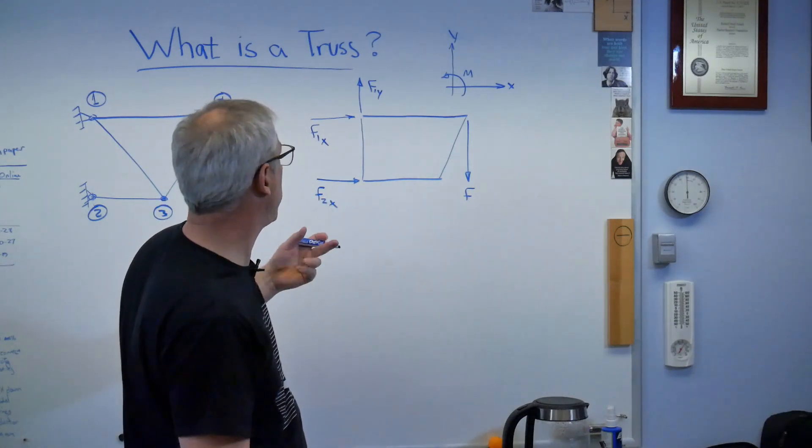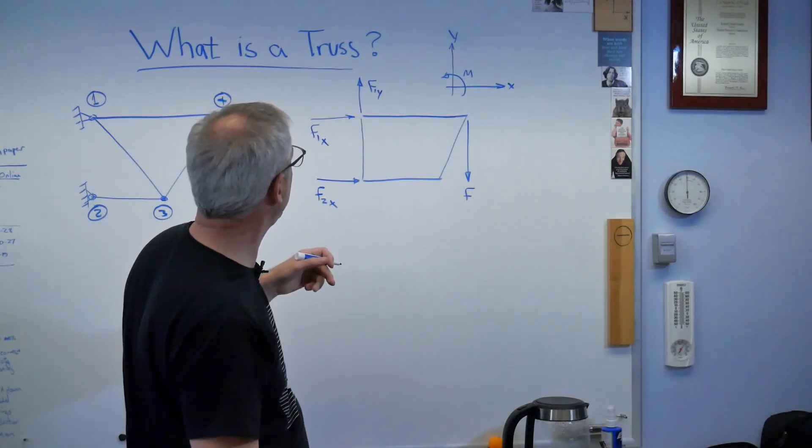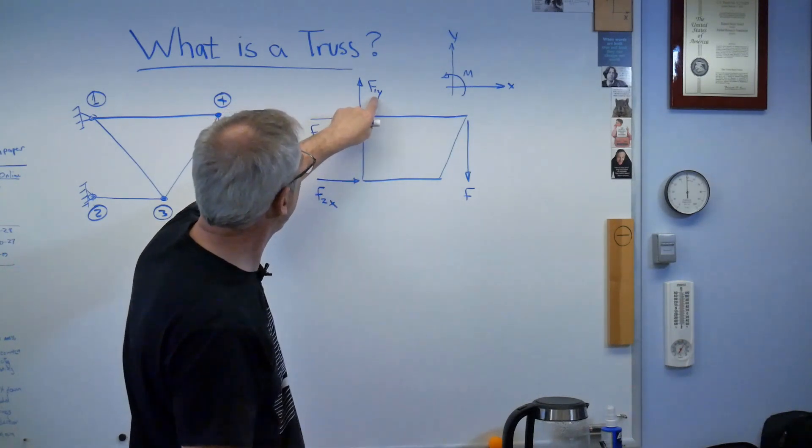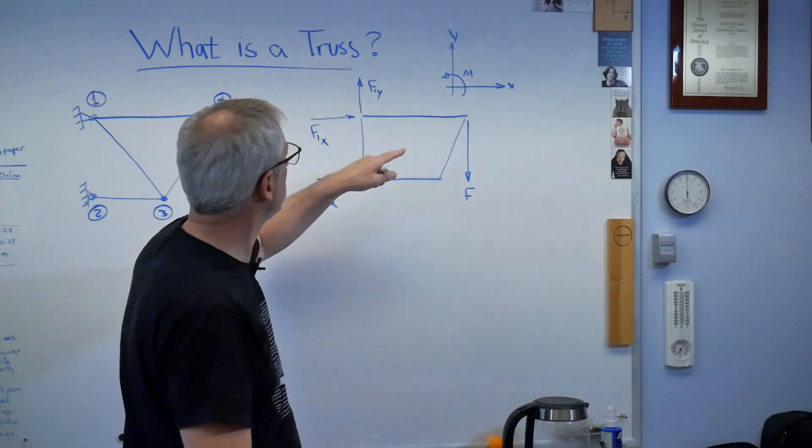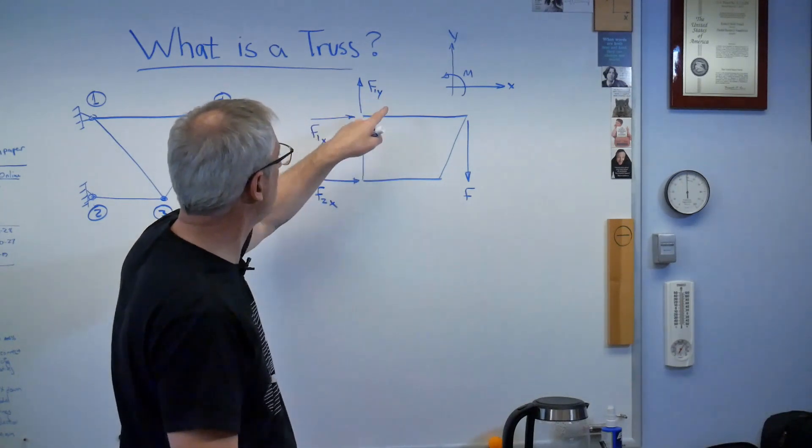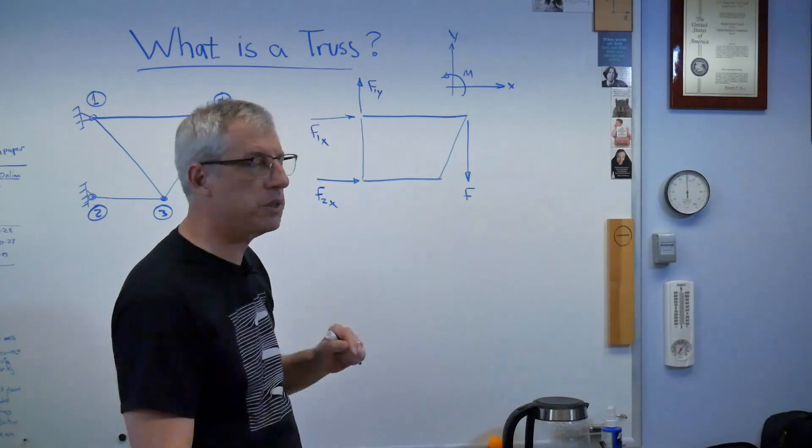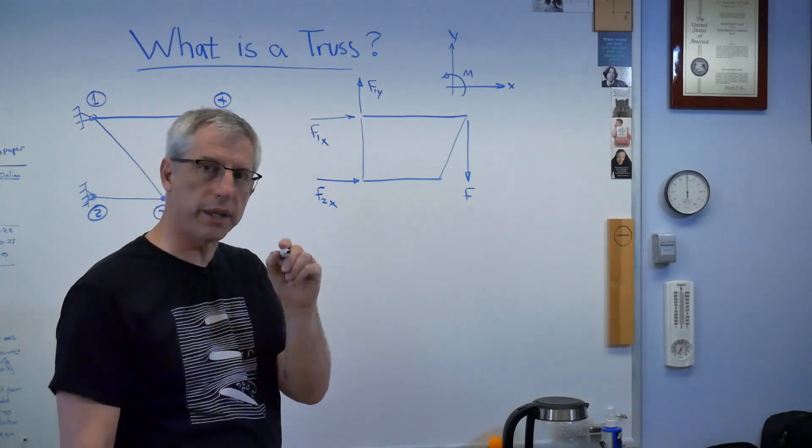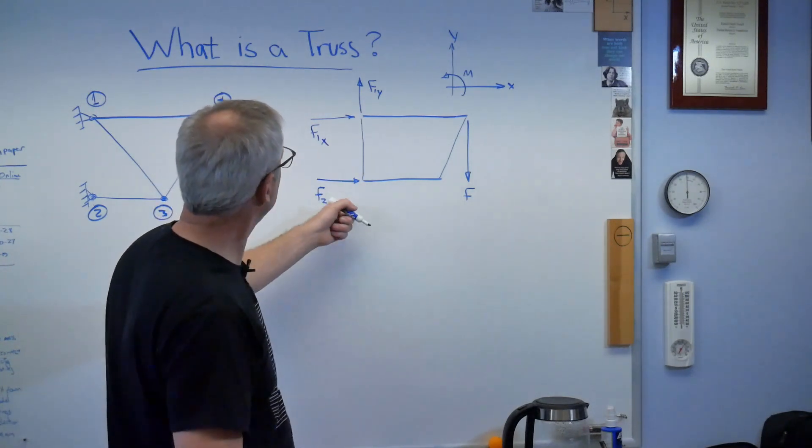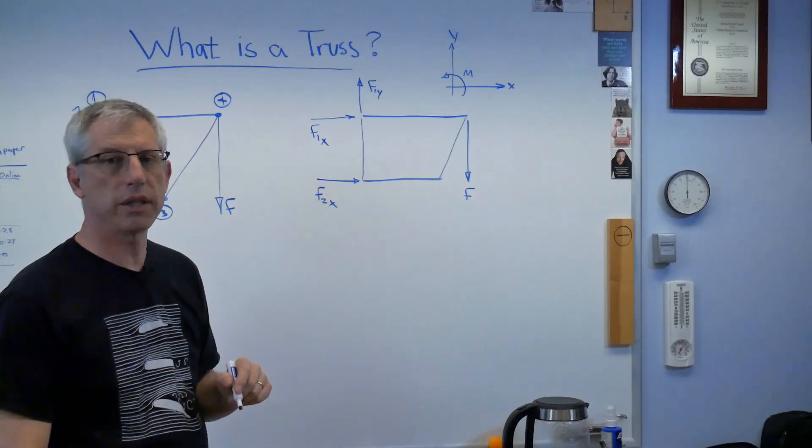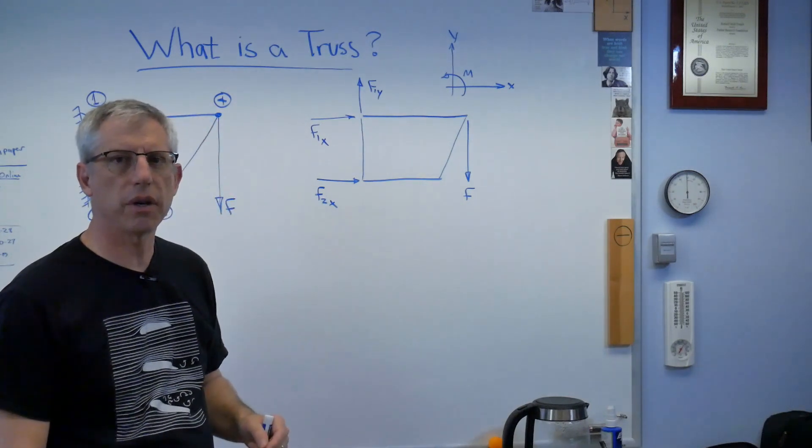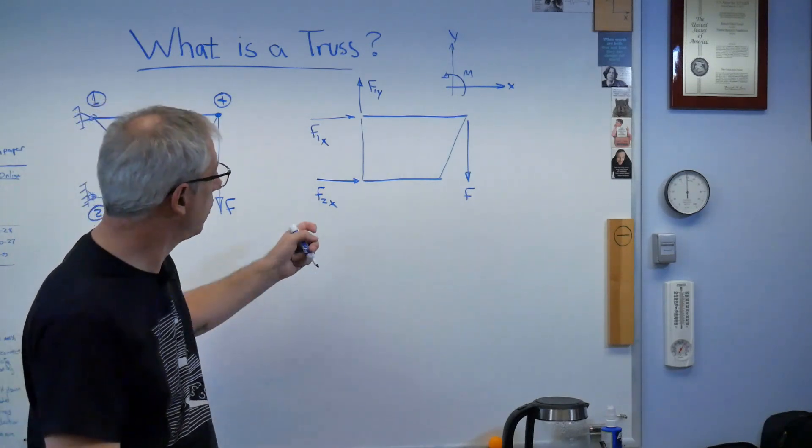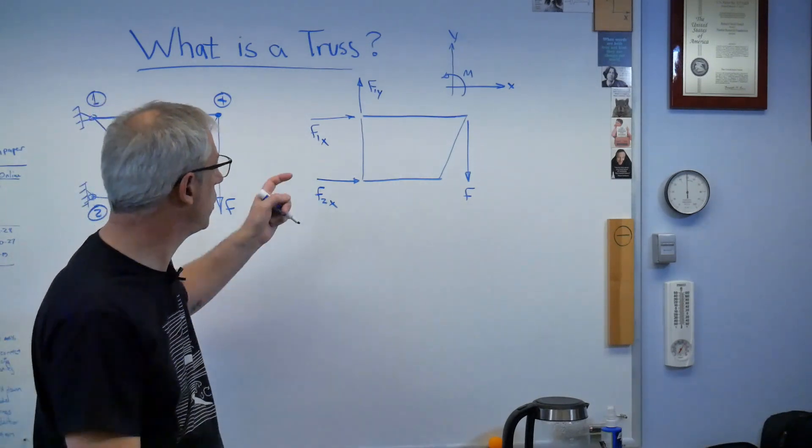So I will write the sum of the moments about that point equals zero. Then I'm going to write the sum of, I don't know, let's go for sum of the forces in the Y direction. Well, I know that force and that force have to add up to zero. They're point opposite directions, so F has to equal F1Y. And what I would do is I would write out the forces in the Y direction equal to zero. Write that equation. The next one, the sum of the forces in the X direction has to be zero. Now these point the same way. They can't add up to zero. Well, they can if one of them is negative and one of them will be.